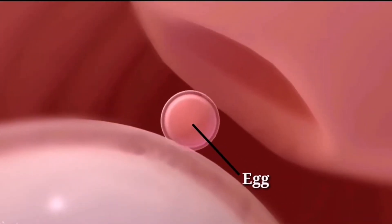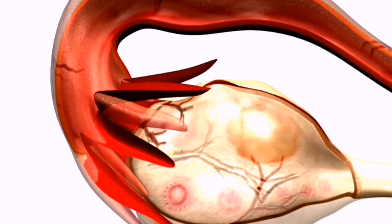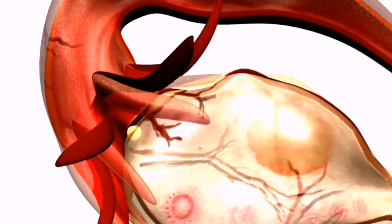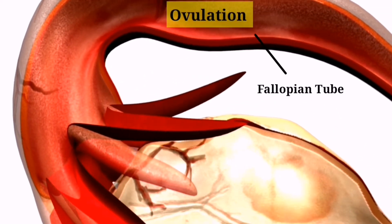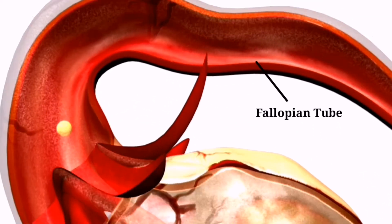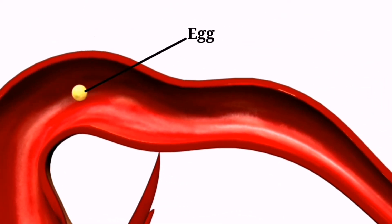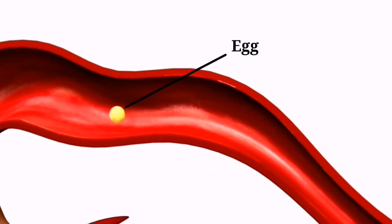The first step in conception is ovulation. This is when a woman's ovaries release an egg into the fallopian tube. Ovulation usually occurs once a month and is triggered by hormonal changes in the body. The egg remains in the fallopian tube for about 24 hours.